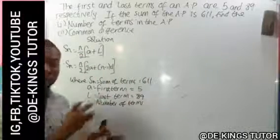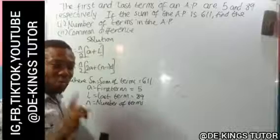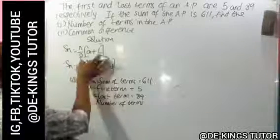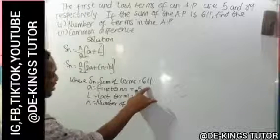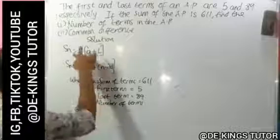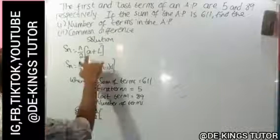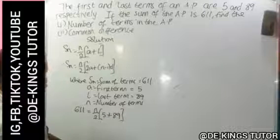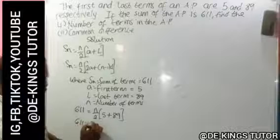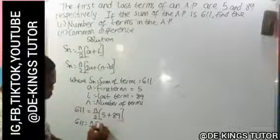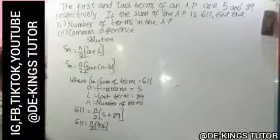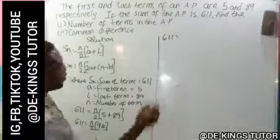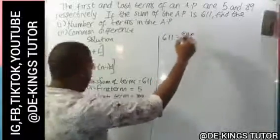We need to find the number of terms, n. At this point, it is important to know the correct formula to use, so we use the first one. Our S_n is 611. So I have 611 equal to n over 2 times (a + l), which is 5 plus 89. Solving that gives us 611 = n over 2 times 94, which is the same as 611 = 94n over 2.